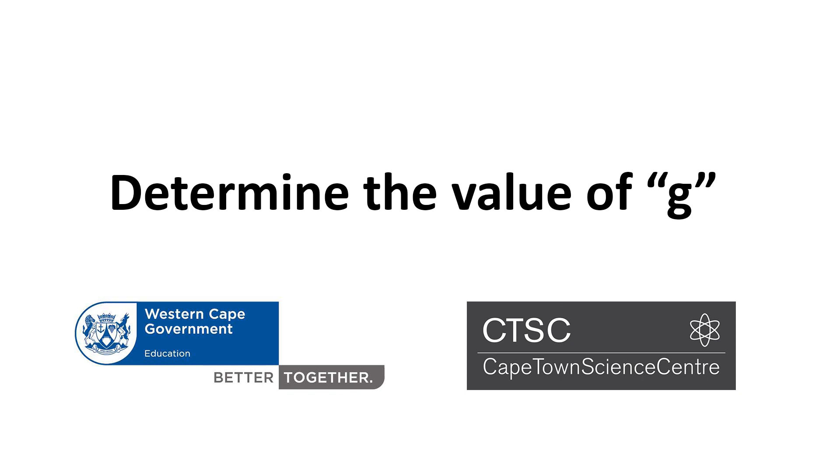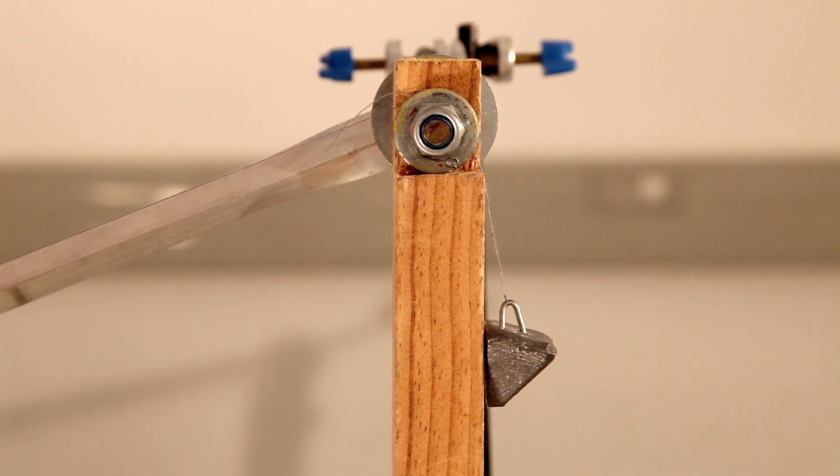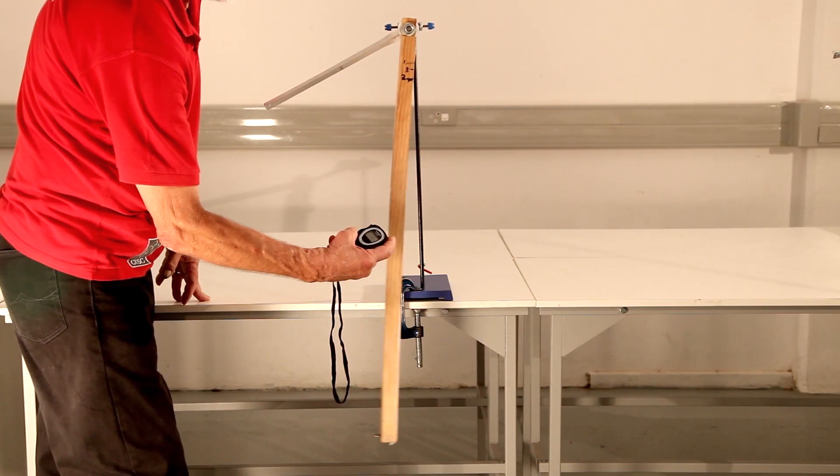To determine the value of g, we use the free fall of an object and a swinging pendulum.